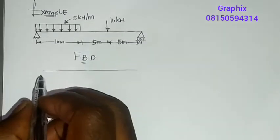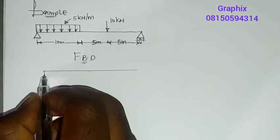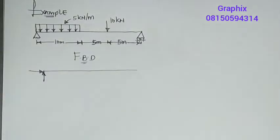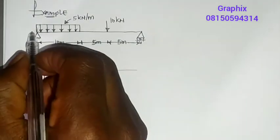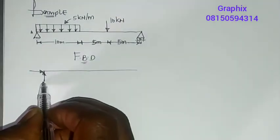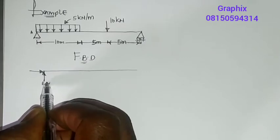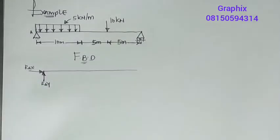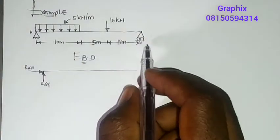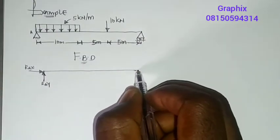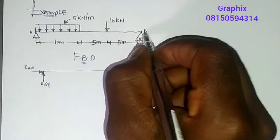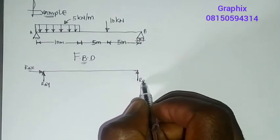A hinge support or pin support always has two reactions. Let's say this is point A — one reaction is RoAY, which is the reaction along the Y-axis, and RoAX, the reaction along the X-axis. This other point is a roller support, carrying one reaction acting upward. Let's say this is point B, and this will be RoBY.